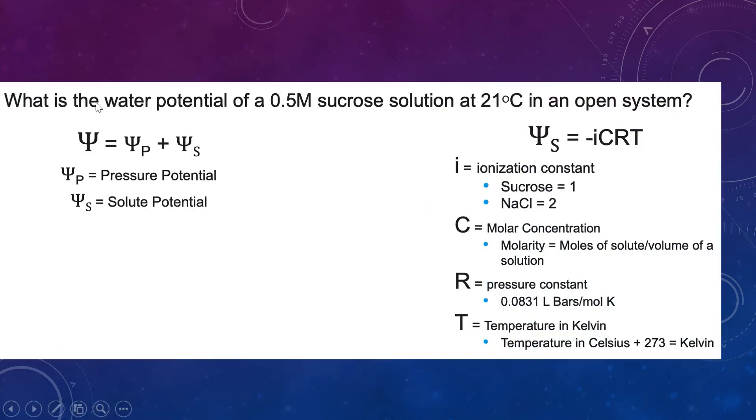So here's an example. What is the water potential of a 0.5 molar sucrose solution at 21 degrees Celsius in an open container or an open system? The big thing, open system, that's telling us right away that our water potential is going to be equal to our potential for the solutes because we're not dealing with pressure. It's an open system. So we can assume that water potential will equal our solute potential. So now we can use our solute potential equation.